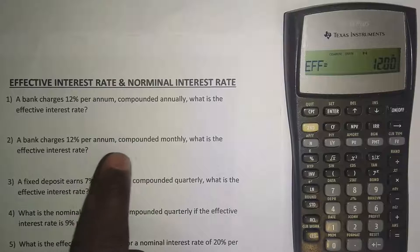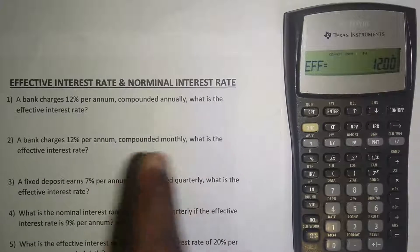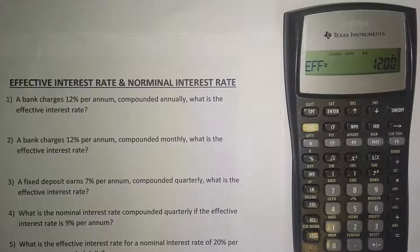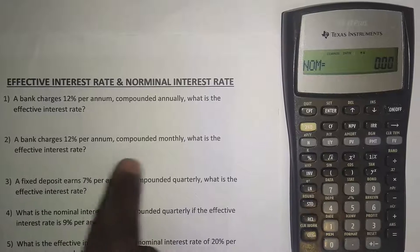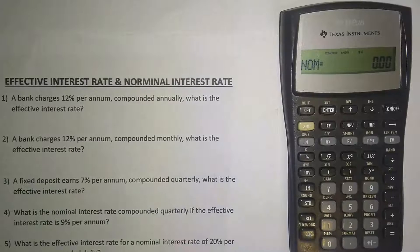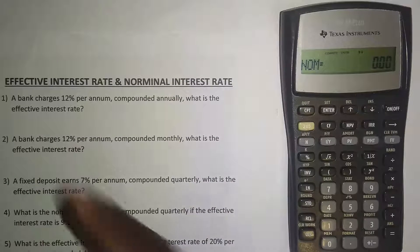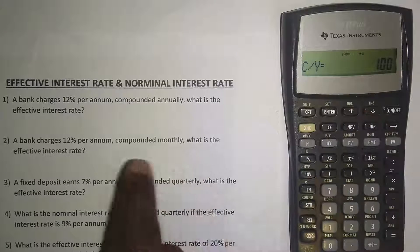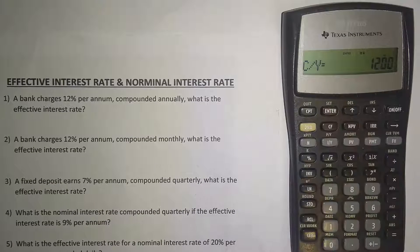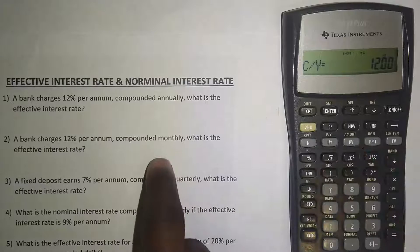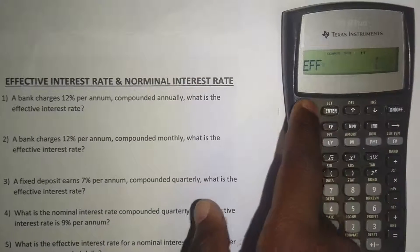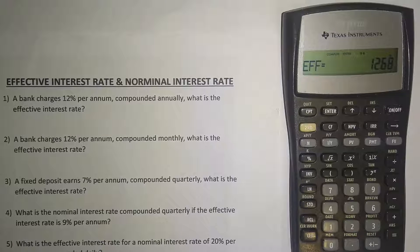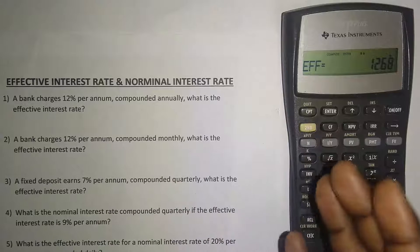For Example 2 — a bank charges 12 percent per annum compounded monthly — first clear your work with second function then C/CE. Enter the nominal interest rate of 12 and press Enter. Press the upward arrow and set the compoundings per year to 12 — because monthly means 12 compoundings per year — and press Enter. Press the upward arrow again, then CPT, and the effective interest rate is 12.68 percent.